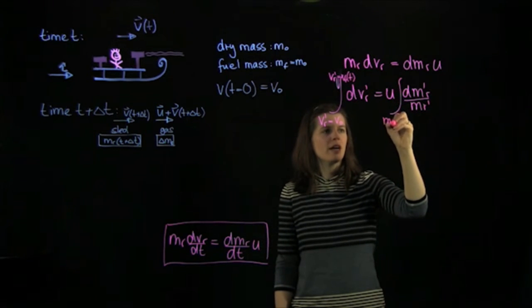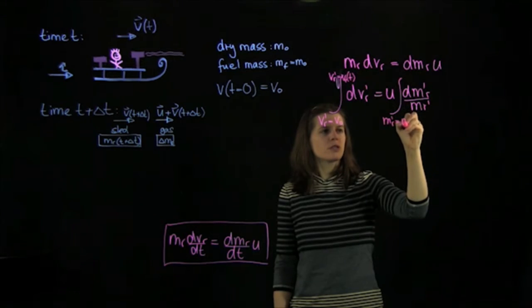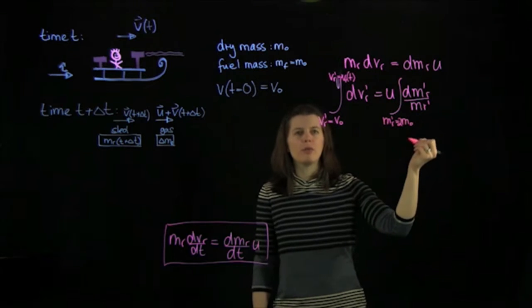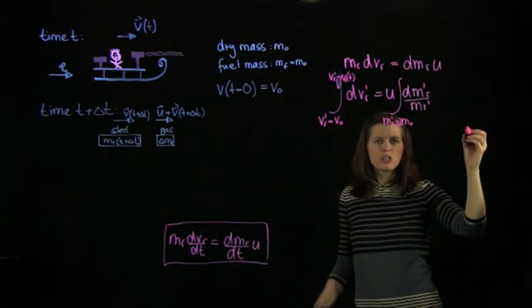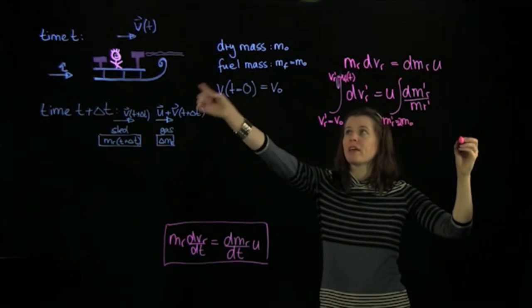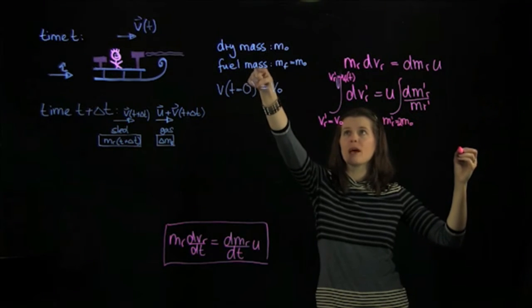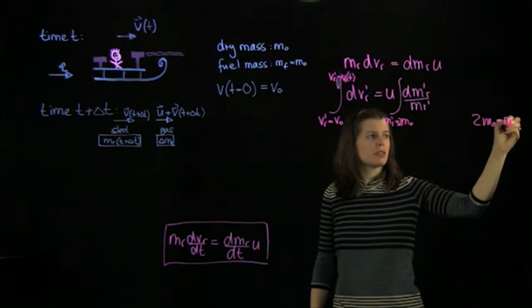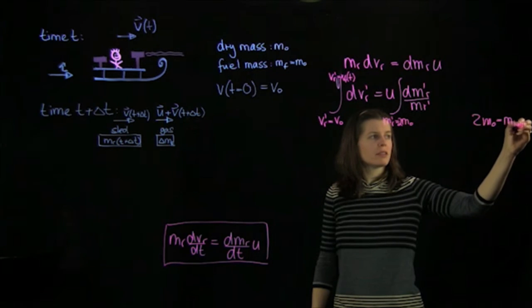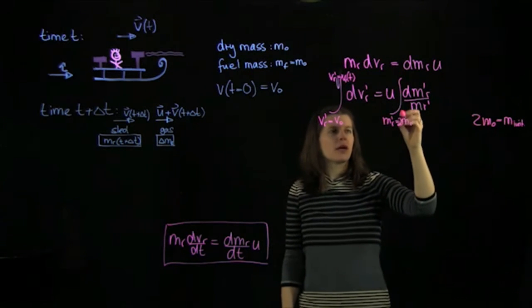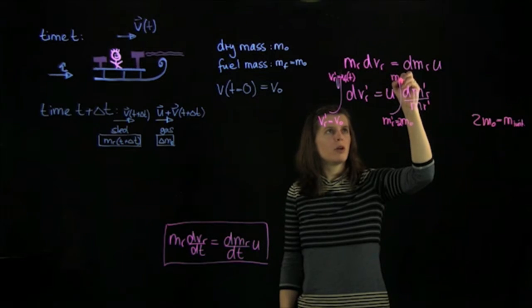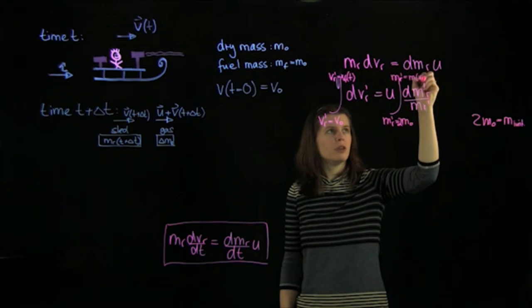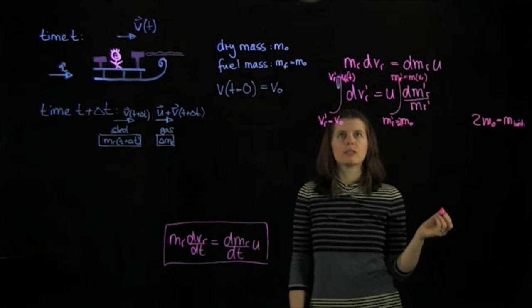And for the mass, we have mr prime equals m0. Actually, not quite m0. It's 2m0, because the initial mass of this is the dry mass and the fuel mass. So that's 2m0. So this is the initial mass. And then we go to mr prime equals m of vr.